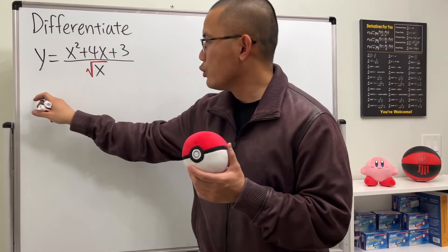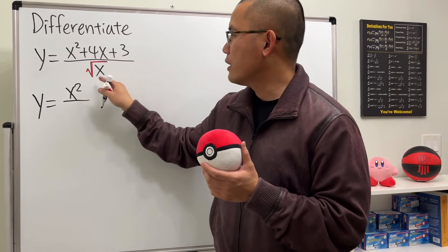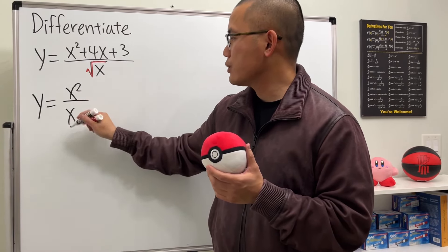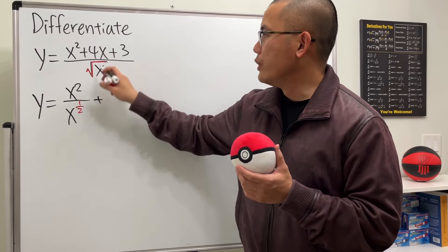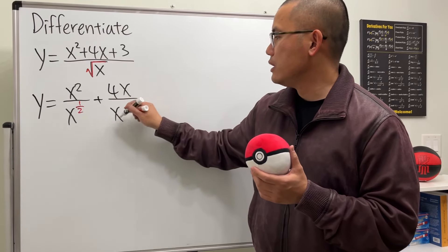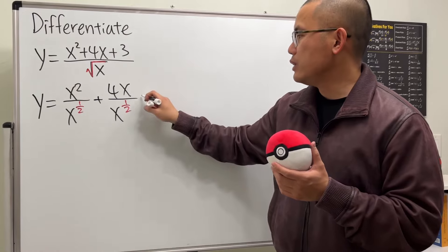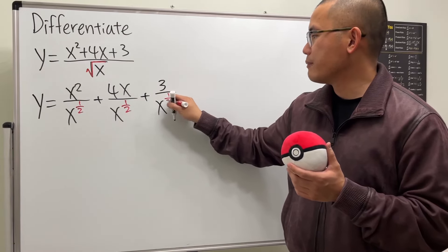So I'm going to rewrite y as x squared over x to the 1 half power, like I said earlier. And then we'll do the same thing for the next one. We add 4x over x to the 1 half power. And lastly, we still have that 3 over x to the 1 half power.